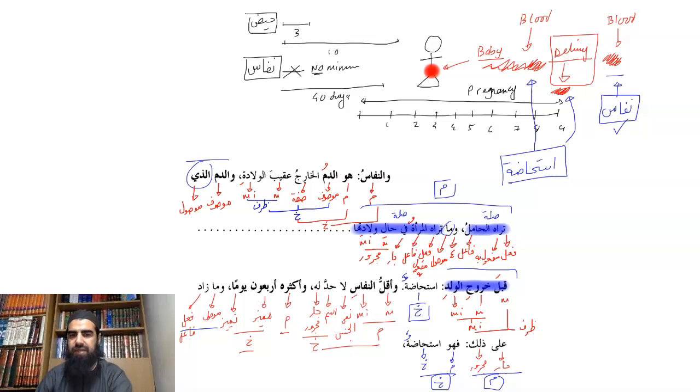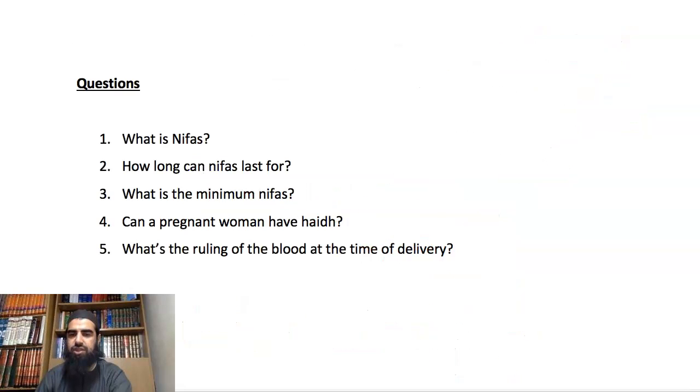And that's why it says over here, aqallu al-nifas the minimum limit of nifas, la hadda lahu there's no limit. In other words, it's possible that a woman may not see any blood at all. Wa aktharuhu and the most of it means the highest limit, arba'una yawman forty days. Wa ma zaada ala thalika and anything that's beyond that, fahuwa istihadatun then that is istihada. So that's going to be counted as dysfunctional bleeding.